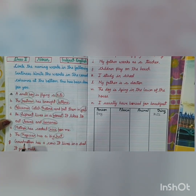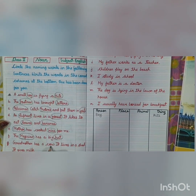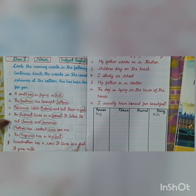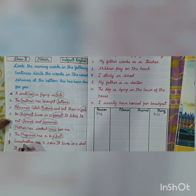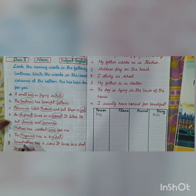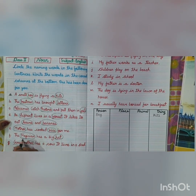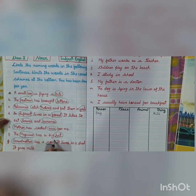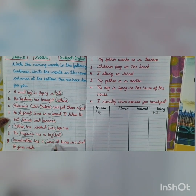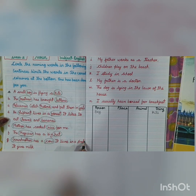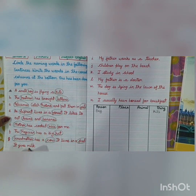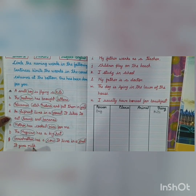Next: Grandmother has a cow. It lives in a shed. It gives milk. Grandmother is a person, cow is an animal, shed is a place, and milk is a thing.